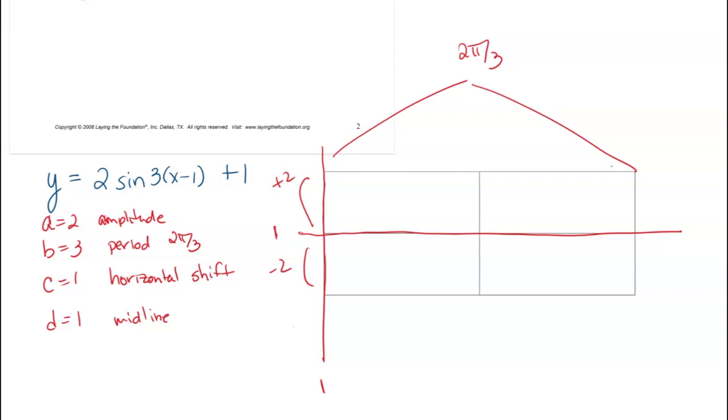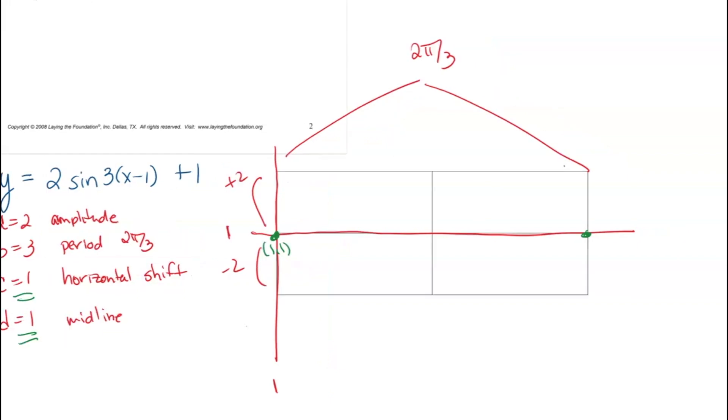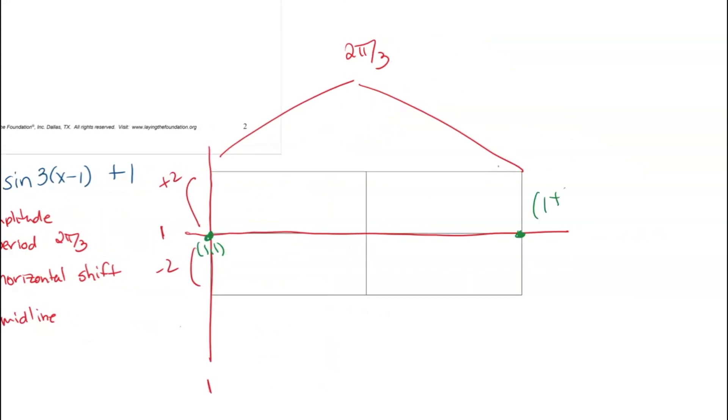What does that mean? That means this point right here is at the ordered pair (1, 1), because I'm to the right 1 for my c and up 1 for my d. And this point over here on the very end is starting at 1 plus 2π over 3, still on that midline.